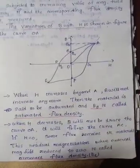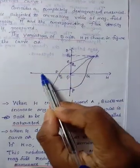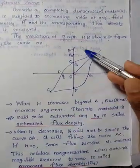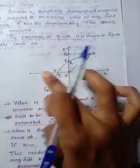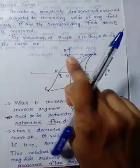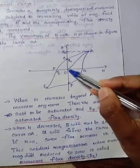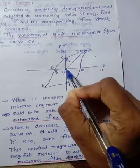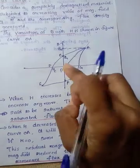This curve is very important. The figure is very important. Here we have to plot H and B. Now we start with this point — this point is the origin, the starting point. We have applied the magnetic field as 0, so this point is 0. We are slowly increasing the value of H.